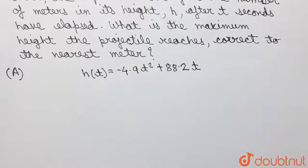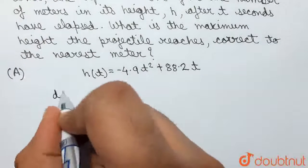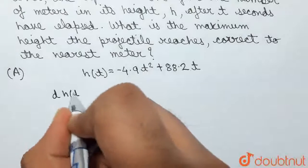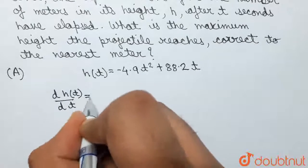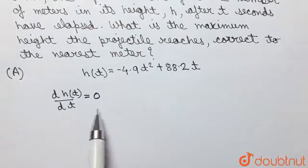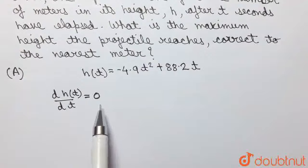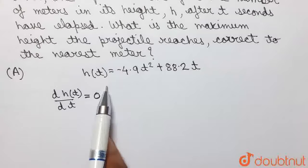So, using the concept of derivatives, we can say that if we solve the equation dh(t)/dt = 0, if we solve this equation for the value of t, then we will find the time at which the projectile reaches its maximum height.